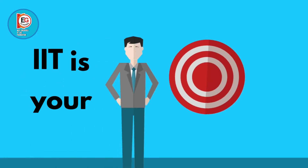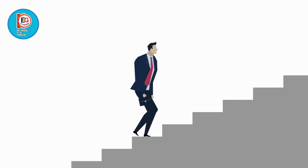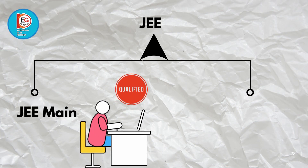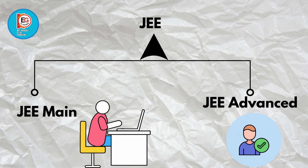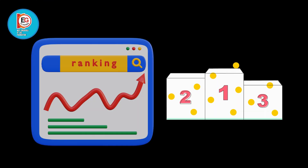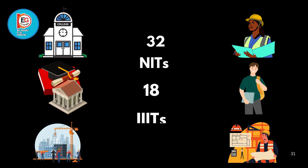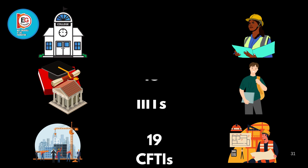JEE Main is conducted by NTA — the National Testing Agency — multiple times a year. It's your first step. If you qualify JEE Main with a top rank, you get to appear for JEE Advanced, which is tougher and more concept-based. Once JEE Main is done, you'll get an All India Rank. With that score you can apply to NITs, IIITs, CFTIs, and even private engineering colleges. And if you qualify, you can go ahead and sit for JEE Advanced to get into an IIT.